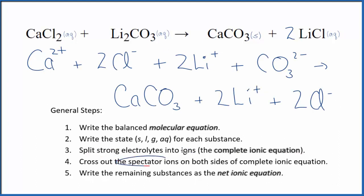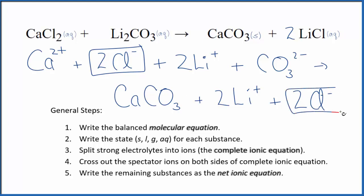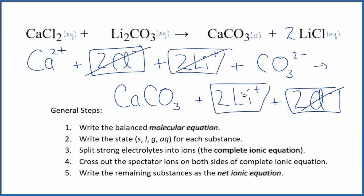Now we cross out the spectator ions — the ones that appear on both sides. In the reactants I have two chloride ions, and in the products I also have two chloride ions, so those are spectator ions — cross them out. I also have two lithium ions in the reactants and in the products, so those are spectator ions too — cross those out.